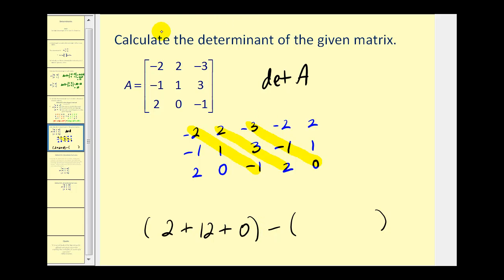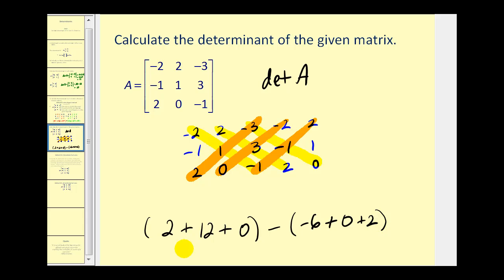Now we'll form the other diagonals that start at the top and move to the left. We have negative three times one times two, that's negative six, plus negative two times three times zero, that's zero, plus two times negative one times negative one, that's positive two. So we have fourteen minus negative four, which is equal to eighteen. The determinant of matrix A is equal to eighteen.